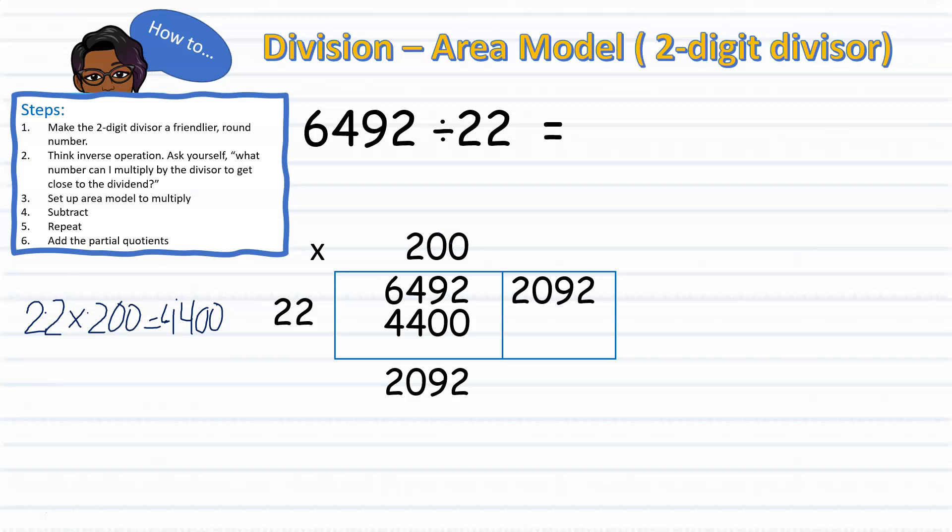we must continue to divide. After extending the area model, we can now divide 2,092 by 22. Again, we should think to ourselves, what number times 22 can get me close to 2,092? Now, based on the work we did before, typically I would keep that off to the side, we have an idea. We already know that 22 times 200 gave us 4,400, which is much larger than the dividend that we need. So then we can try 22 times 100, that giving us 2,200. Our divisor is 2,092, so therefore that's too large. So we will then multiply 22 times 90.